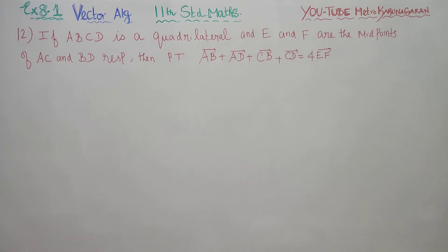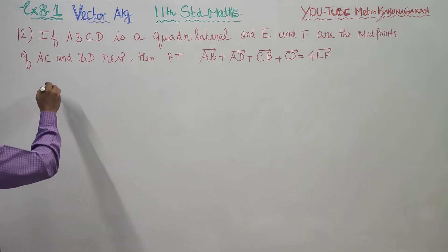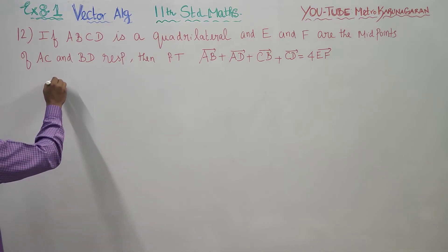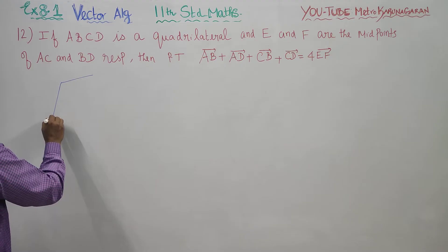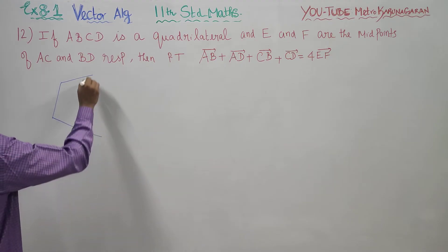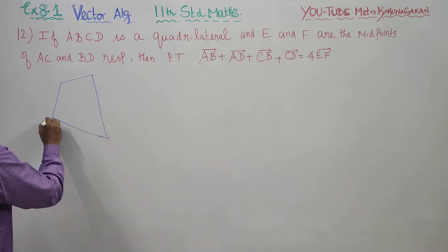Dear 11th standard students, in exercise number 8.1, sum number 12: if ABCD is a quadrilateral and E and F are the midpoints of AC and BD. Take some quadrilateral with the name ABCD.